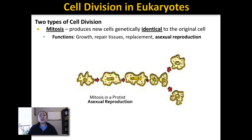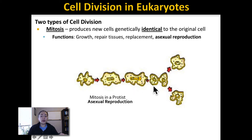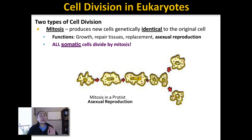Mitosis also occurs during asexual reproduction. Asexual reproduction occurs when new individuals are made without the fusion of sperm and eggs — you could think of it as like cloning. This happens in animals like sponges and jellyfish, but is also very common in single-celled organisms like protists. An example of a protist would be an amoeba. With that said, it is important to remember that all somatic cells in your body divide by mitosis.